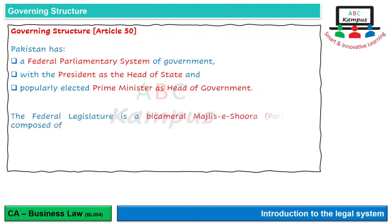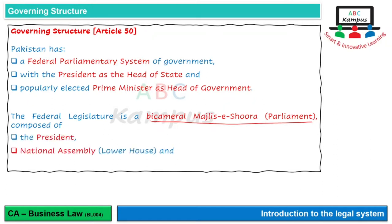इसमें जो हमारा Federal Legislature है, जो Law बनाने वाली है, वो Bicameral Majlis-e-Shoora है, यानि Parliament जिसे हम कहते हैं, और ये तीन चीज़ों से Compose होती है: President, National Assembly जिसे Lower House भी कहा जाता है (उर्दू में ऐवाने ज़ेरीन), और Senate या Upper House. ये तीन ऐसे इदारे हैं जो मिलकर Federal level पर Pakistan में Law बनाते हैं.